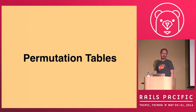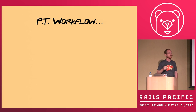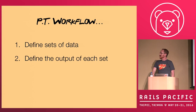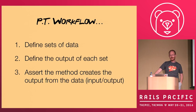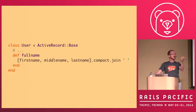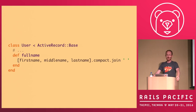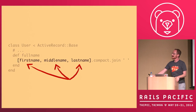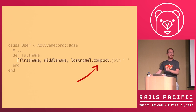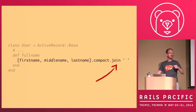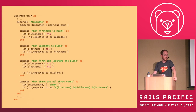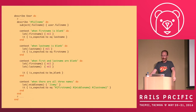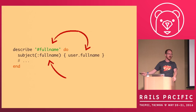Pattern number two is permutation tables. The workflow: first, define a set of data. Second, define the output of each set. Third, assert that the method creates the output from the data — input, output. Looking back at our user model, we've got a method that concatenates all the various name segments: first, middle name, and last name. If any of those are nil, it strips it out and joins them with a space in between. If we were to write tests for this, we describe the full name method and set the subject to full name, calling the method directly.